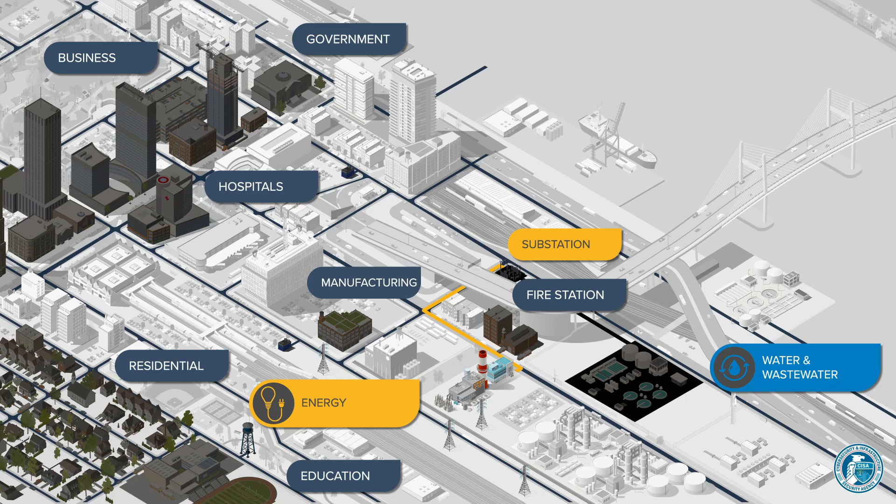As the simplified dependency scenario shows, the disruption of any one of an infrastructure system's critical service providers can ultimately have a cascading effect that disrupts other critical systems, as well as the fundamental functions of an entire community.